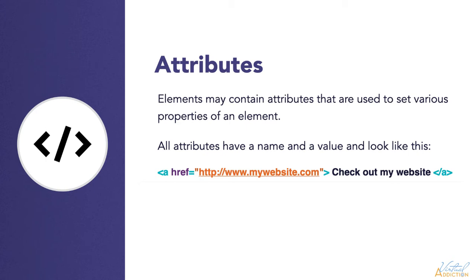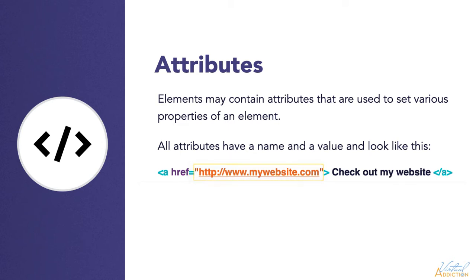As you can see here, I have an anchor tag. Within the start tag, I have an href attribute. Notice that the href attribute is separated by a space from the element name and it appears within the angle brackets of the starting tag. Immediately following the attribute, we have an equal sign and then we have the attribute value. Attribute values are always quoted.